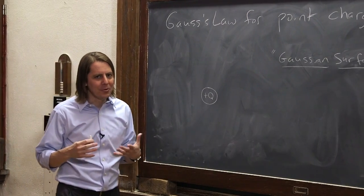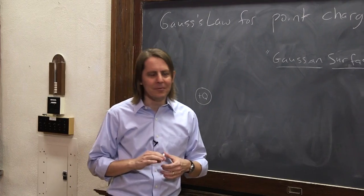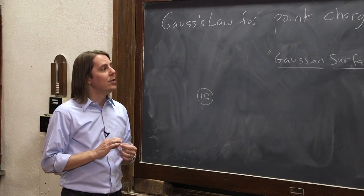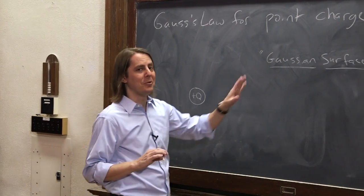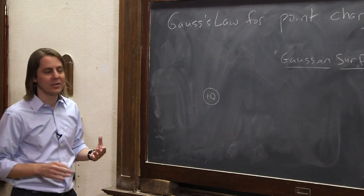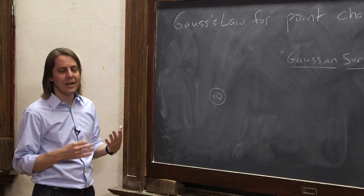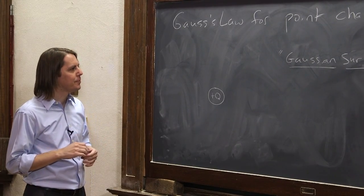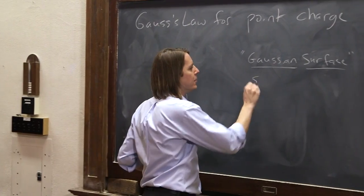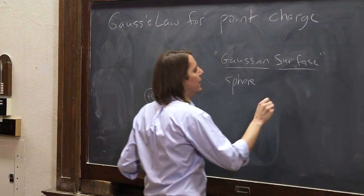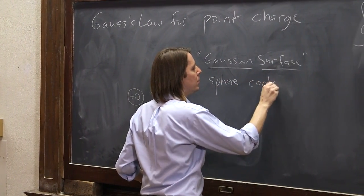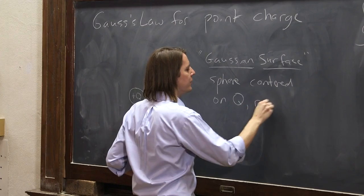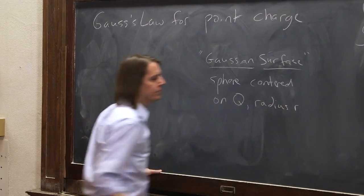Knowing how to choose the right one is a bit of wisdom. We can't write a formula for everything - there's experience and wisdom involved. The wise person would tell you to use symmetry. I'm going to give you the surface and talk about why we chose it. In this case, it's a sphere centered on Q with radius R.